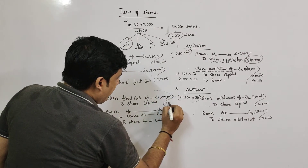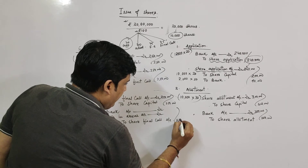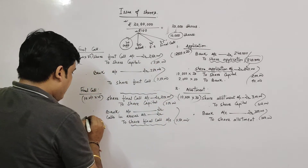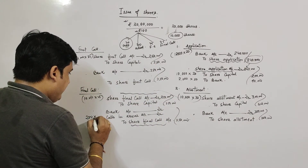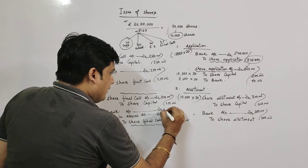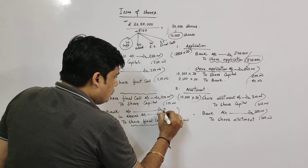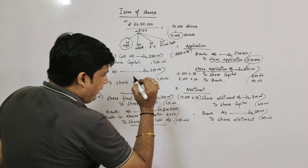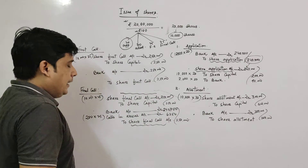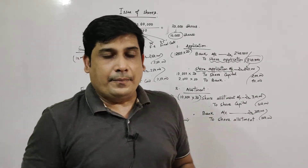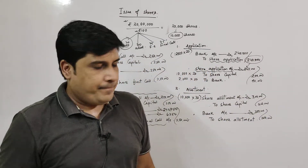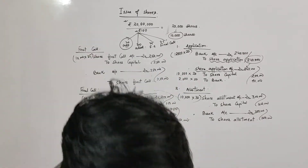For final call, we again use ₹25. The total final call due is for 10,000 shares, but 250 shares' holder didn't pay. So Calls-in-Arrears = 250 × ₹25 = ₹6,250. Bank will receive the rest: 10,000 × ₹25 minus ₹6,250 = ₹2,43,750. That completes our final call entry.